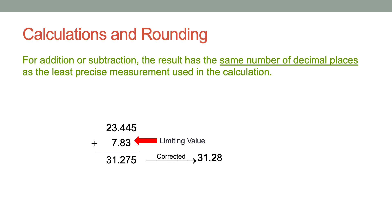For addition and subtraction, the result has the same number of decimal places as the least precise measurement — we want the fewest decimal places. For example, 23.4445 + 7.83: the least precise measurement is 7.83 with two decimal places. The raw answer is 31.2745, which should have two decimal places: 31.27, and the 5 tells us to round up, giving a final answer of 31.28.